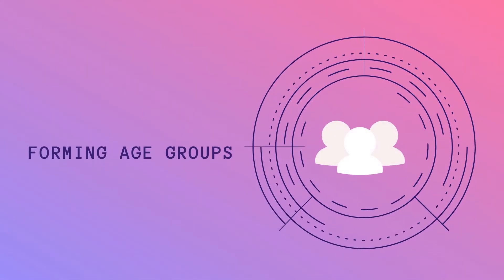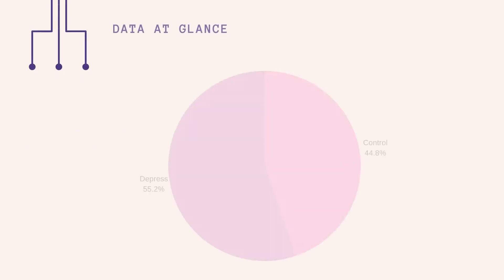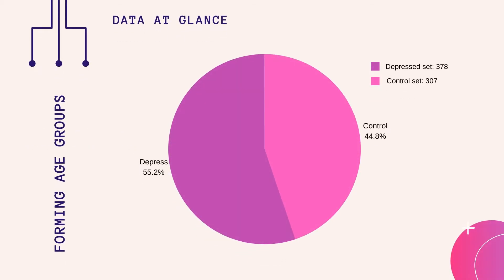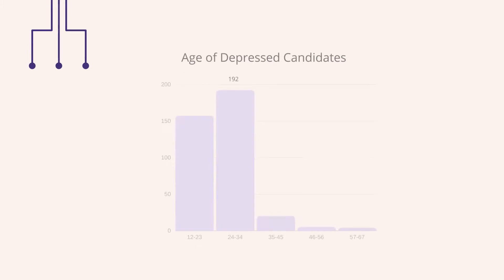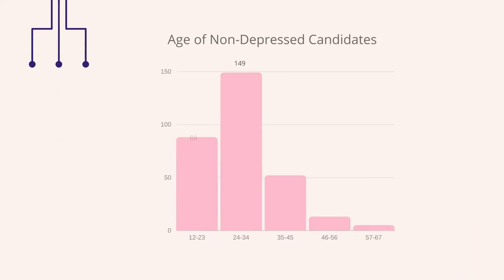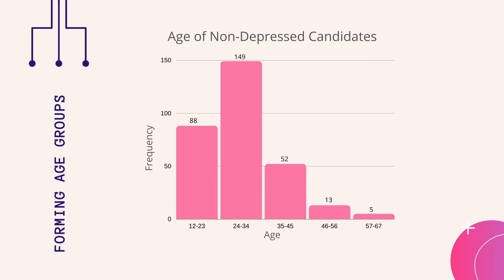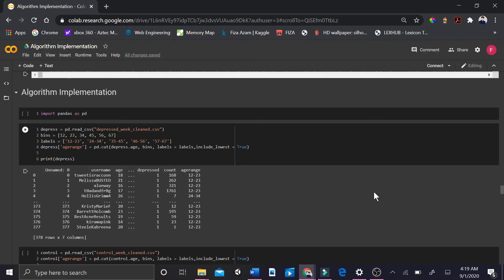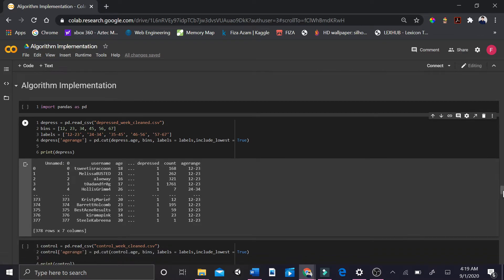Forming age groups: our dataset contains tweets of 55.2% depressed users and 44.8% non-depressed users. We divided depressed users into five age groups: 12–23, 24–34, 35–45, 46–56, and 57–67. The diagram shows the number of users each age group contains. Similarly, non-depressed users were divided into the same five age groups.